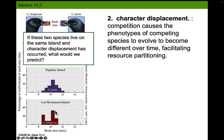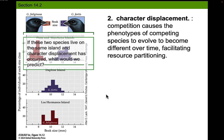This other species, when found alone on its island, has pretty much the same beak size. These two species would compete with each other for the same seeds. So what gets interesting is if these two species live on the same island and character displacement is occurring — what would we predict? We would predict that perhaps they would shift so they don't overlap, so maybe this one would evolve a bigger beak to eat bigger seeds.